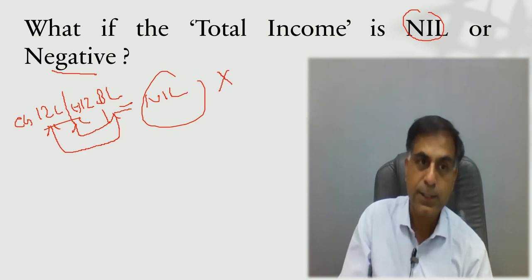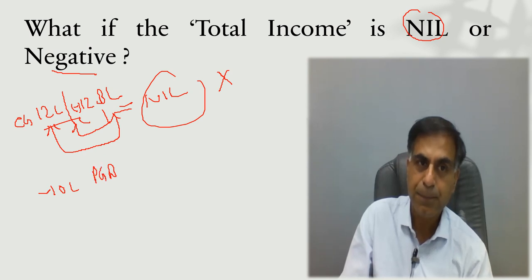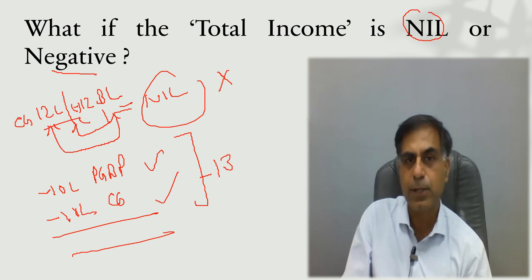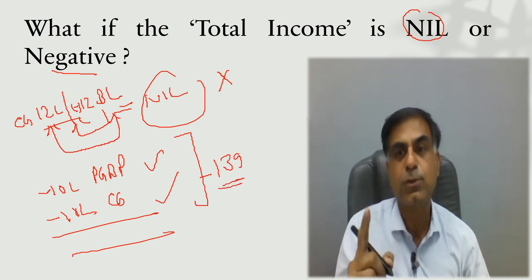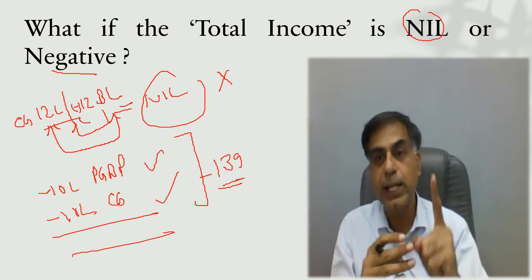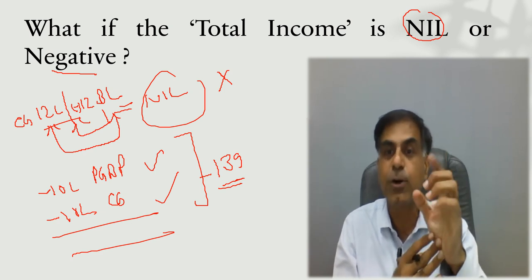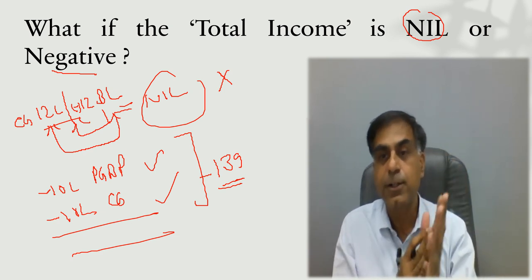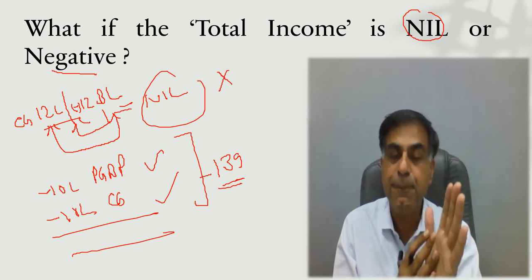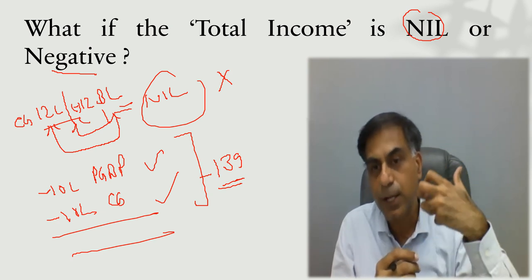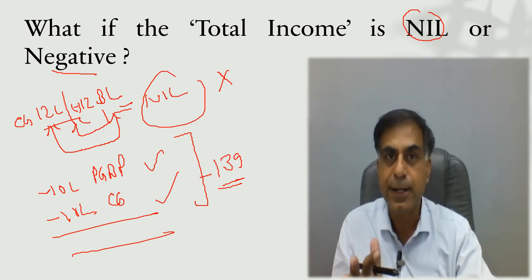There are two very important cases where filing becomes essential. When you have a business loss or PGBP loss, or a capital gain loss — say Rs. 10 lakh under each — and you want to carry them forward, Section 139 requires that you file ITR, and that too within the due date under Section 139(1), which in normal cases is 31st July. If you don't, you will lose your right to carry forward those losses.